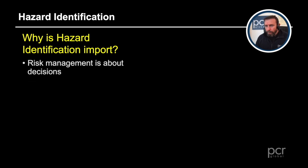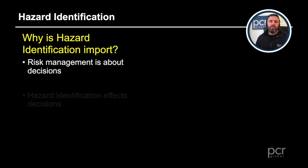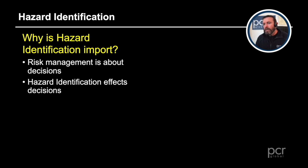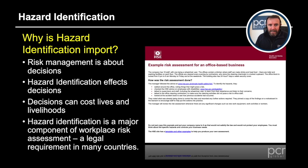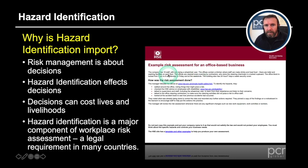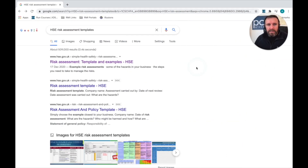Why is hazard identification important? Risk management is about decisions, and decisions cost lives and livelihoods. Hazard identification affects those decisions. It is also a major component of workplace risk assessment and is a legal requirement in many countries, and definitely in the UK.